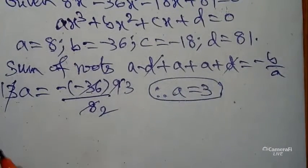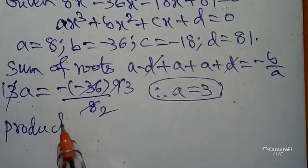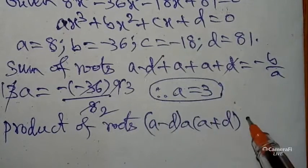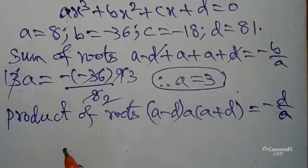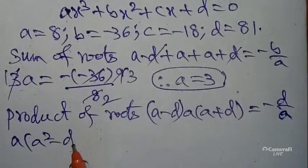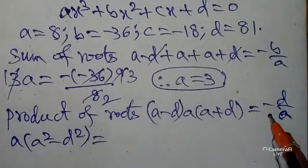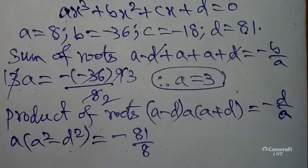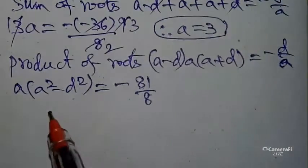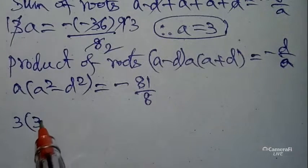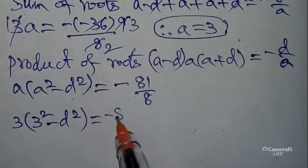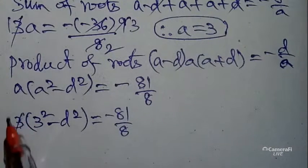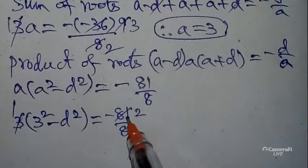To get 'd', use product of the roots. The roots are (a-d) × a × (a+d) = -d/a. This becomes a(a² - d²) = -81/8. According to our values, substituting a = 3, we get 3(9 - d²) = -81/8. Dividing, 9 - d² = -27/8.